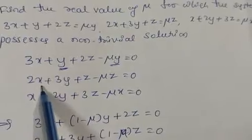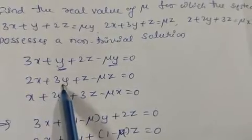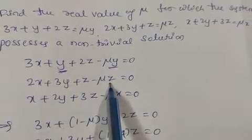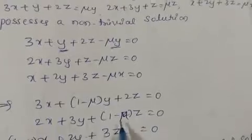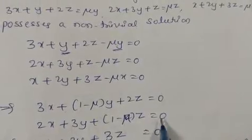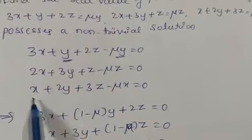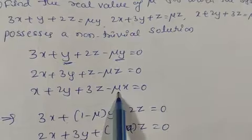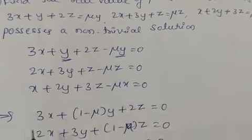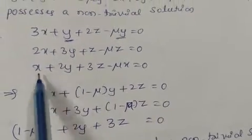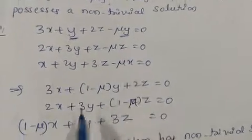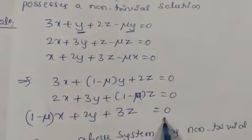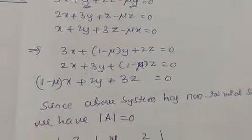In the second equation, 2x plus 3y plus z equals mu z — the two z terms give 2x plus 3y plus (1 minus mu)z equals 0. In the third equation, taking x common gives (1 minus mu)x plus 2y plus 3z equals 0.